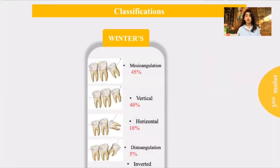For the classifications, we have Winter's classification, which classifies the impacted lower third molar according to its angulation. We have the mesial angulation which forms 45% of the cases, then the vertical, horizontal, distal angulation, and the inverted one in lesser percentages.